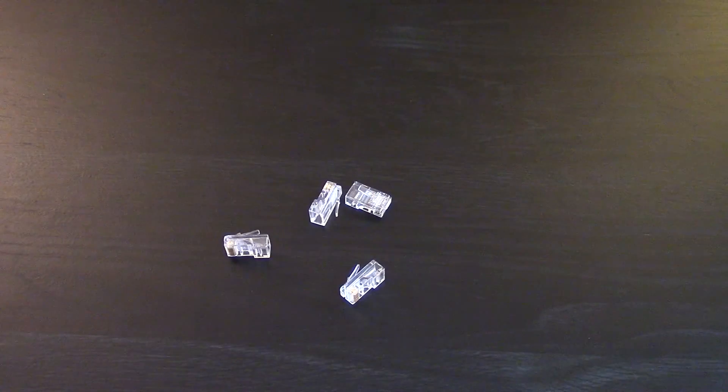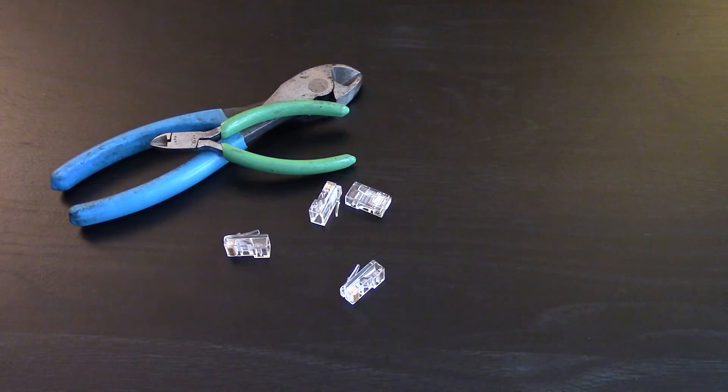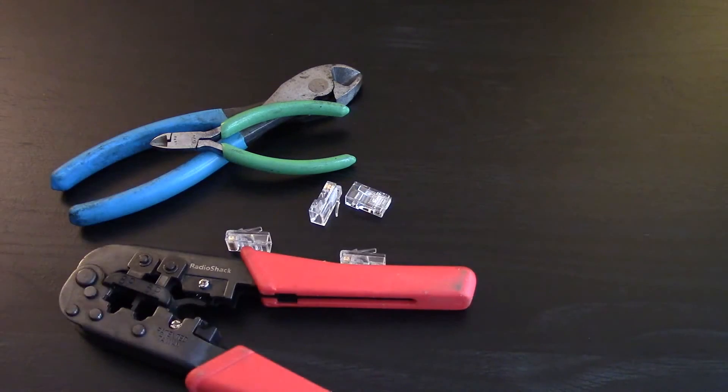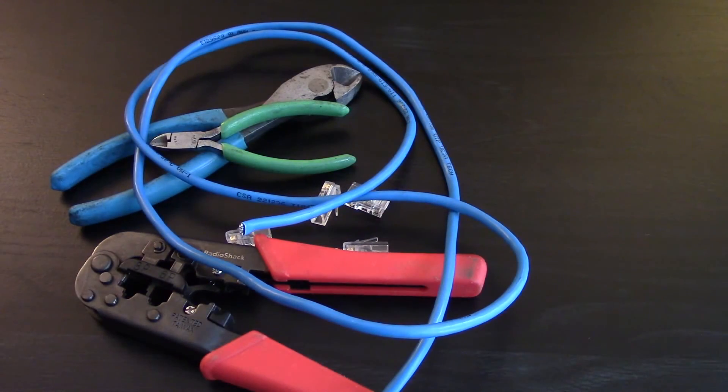So let's get to it. For this tutorial you will need four RJ45 ends, some wire cutters, an RJ45 cable crimp, and some Cat5, Cat5e, or Cat6.